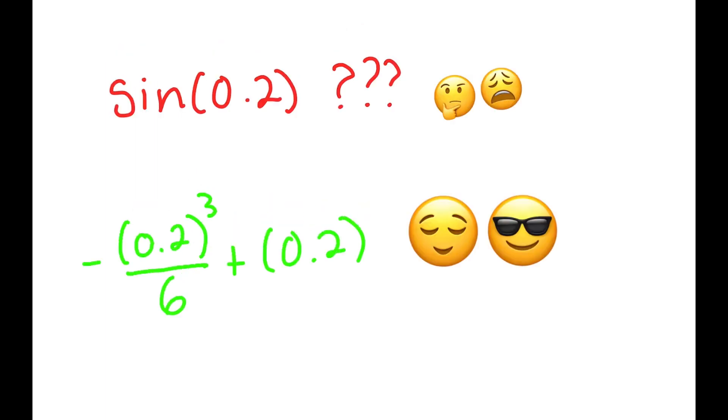Taylor series are really useful for approximating the values of these functions. If someone gave you sine of 0.2 and asked you for the answer, it would be pretty hard to figure out, but if you plugged in 0.2 into the function negative x cubed over 6 plus x that we got earlier, that's a lot easier to calculate, and it should give you a similar answer, so long as you're not too far away from your center.